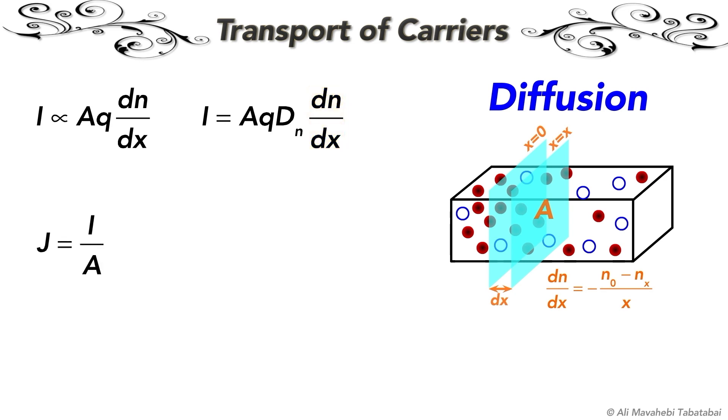Current density can be easily obtained by dividing the current by the cross-section area.